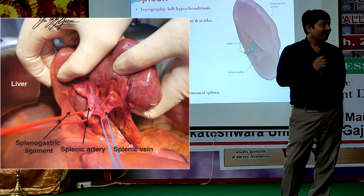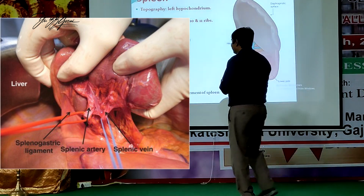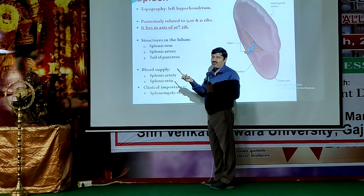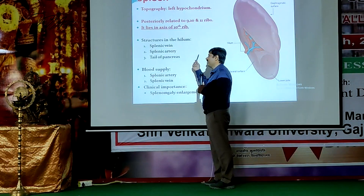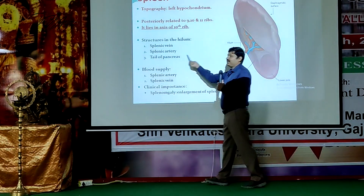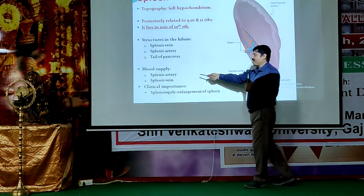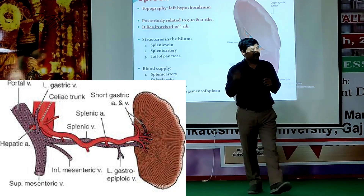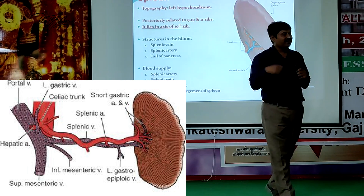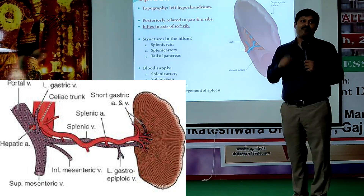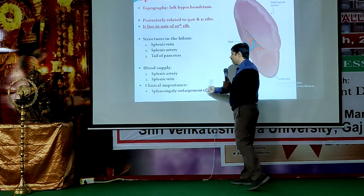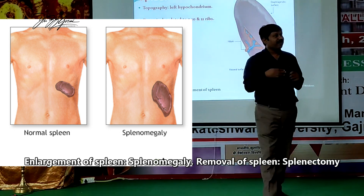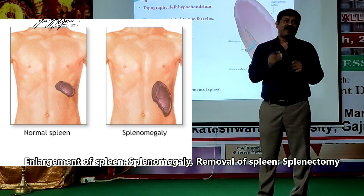So even as first-year beginners, you need to understand this clinical importance. The blood supply is the splenic artery and venous return is via the splenic vein, which we have already discussed. The splenic artery comes from the celiac trunk and the splenic vein joins the superior mesenteric vein to form the portal vein.